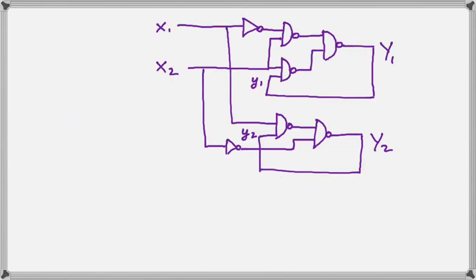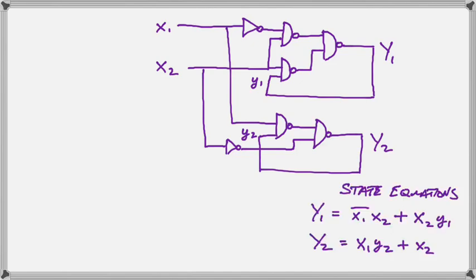All right, our last example is the most complicated of all. In this example, we have two inputs, x1 and x2, and two outputs, y1 and y2. Now, our state equations are always going to have the same number of state equations as the outputs. So we have two state equations for the y1 and y2 as formerly.